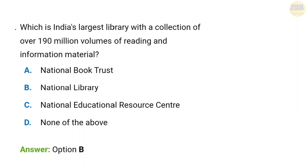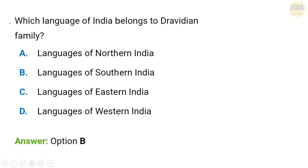Next question: Which is India's largest library with a collection of over 190 million volumes of reading and information material? The answer is the National Library, located in Kolkata, with a capacity of over 190 million volumes of reading and information material.